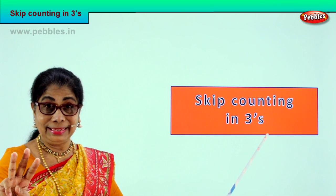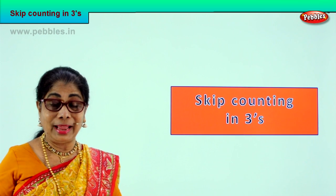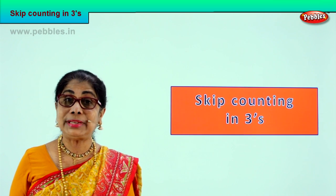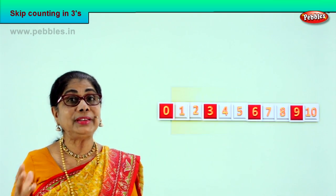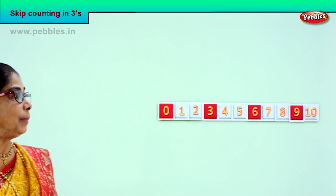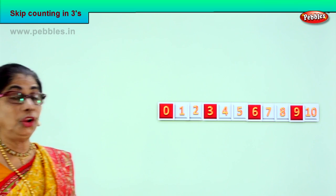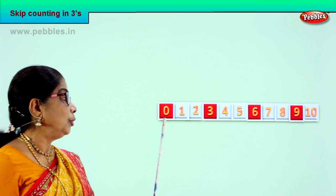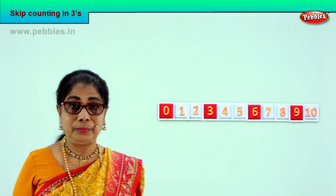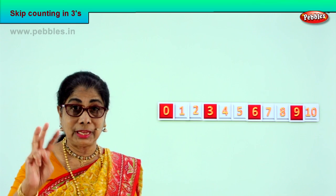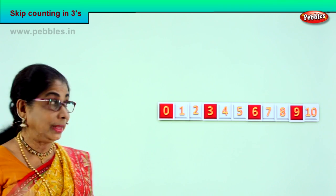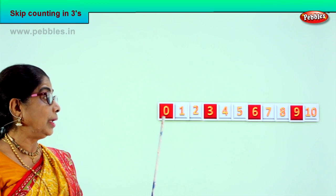Alright, let's look at from 0 to 10. First, do the skip counting. You have 0 up to 10 and we are going to do skip counting in threes.